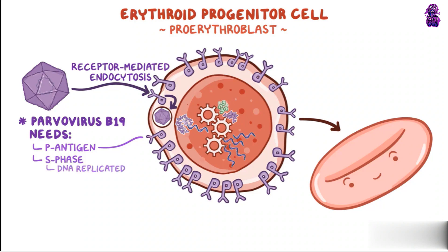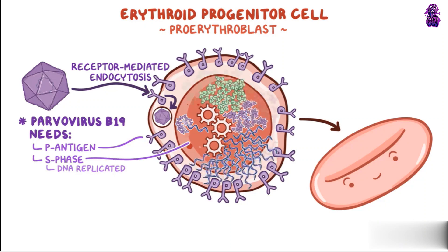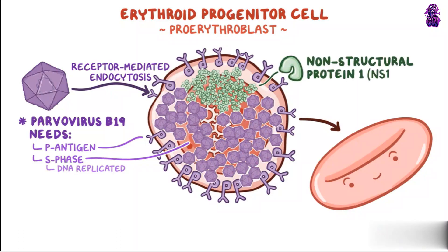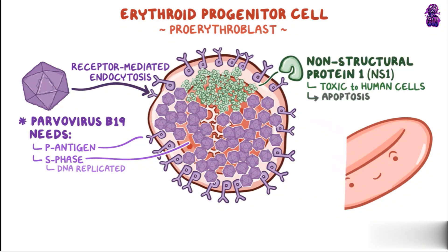Since the body is constantly producing new red blood cells, there are always proerythroblasts going through the S phase at any given time. As the virus replicates and matures, it produces a protein called non-structural protein 1, or NS1, which is toxic to human cells and causes apoptosis, or cell death.